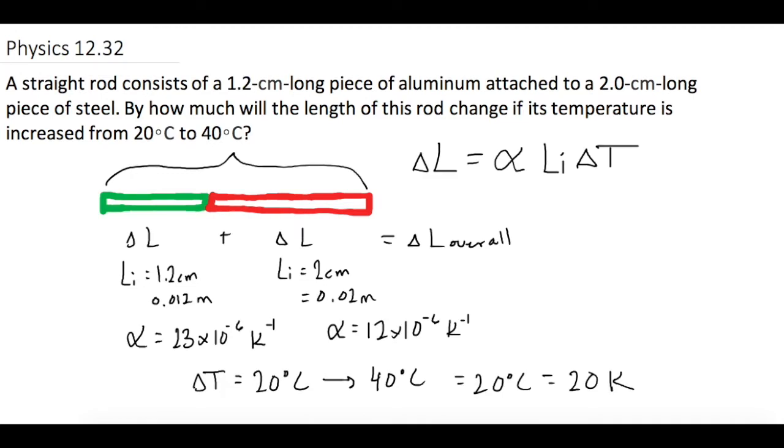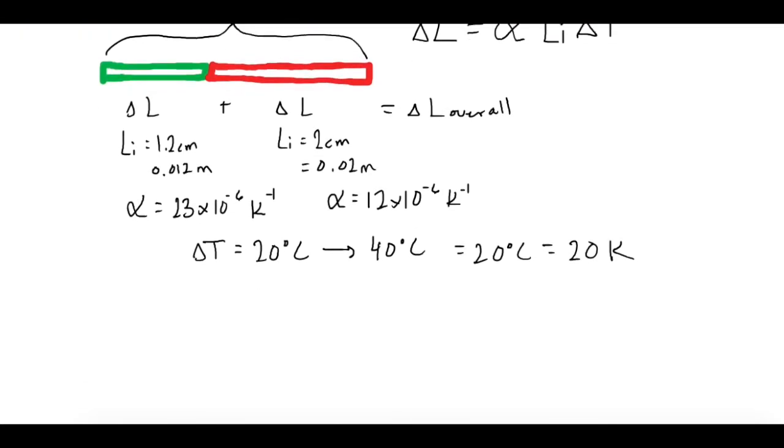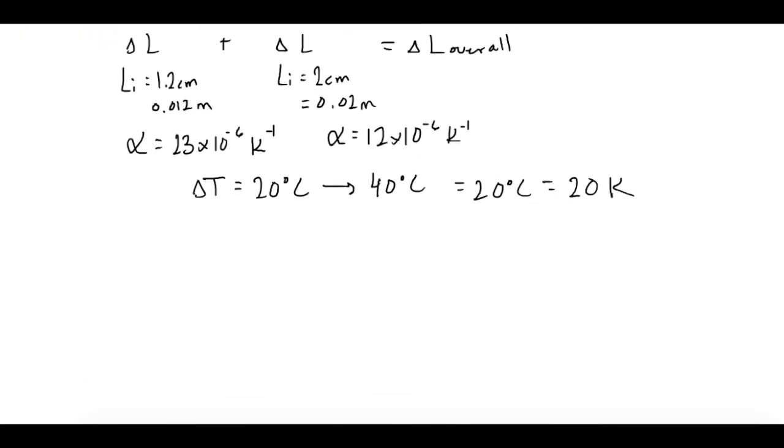So now that we have everything, let's just plug it in. Let's scroll down so we have some more room. So we're going to have delta L overall equals alpha for aluminum, let's do aluminum first. So alpha for aluminum is 23 times 10 to the negative 6 inverse kelvin times the initial length 0.12 meters times the temperature change, which is 20 kelvin.